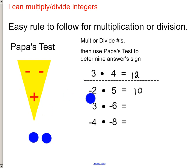It's a little code that you can use. This is a negative number, so it was negative 2. This is a positive number. And so, all that you have left is a negative sign in that Papa's Test, which means that your answer will be negative.